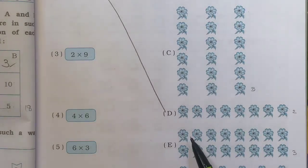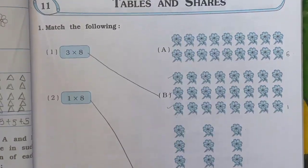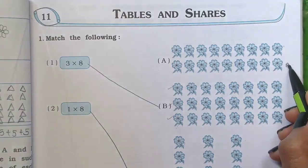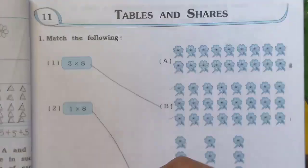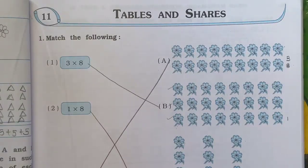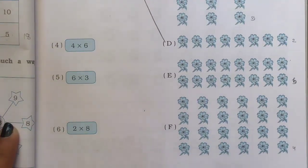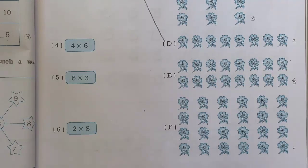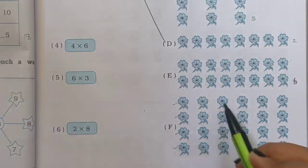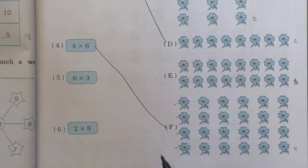Number 3 is 2 multiplied by 9. Then number 4 is 4 times 6. We have to find 4 times 6: counting 1, 2, 3, 4, 5, 6 — that is 6 objects — and how many times: 1, 2, 3, 4 — it is 4 times 6. So we match 4 with F.